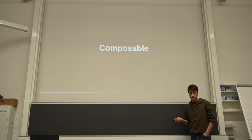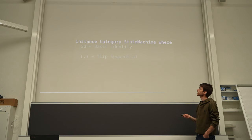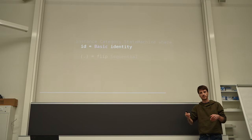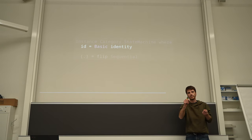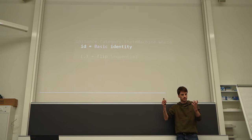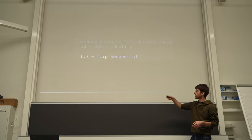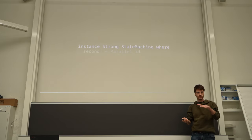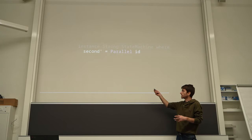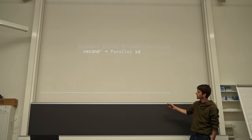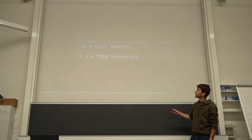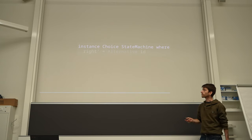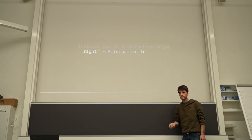This is composable — take Category as a type class. The identity is just 'basic' of identity, where identity is a machine with trivial state (just one single state) that for any input gives back that input as output. Composition is just 'flip' of the sequential constructor. Similarly for the Strong type class — which gives you parallel composition in the profunctor hierarchy — the implementation is just 'second = parallel id'. For Choice — which gives you alternative composition — the implementation is 'right' = alternative id. Extremely simple.